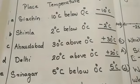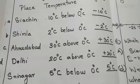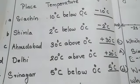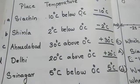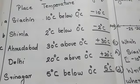Siachin. 10 degree Celsius below 0 degree Celsius. Below means negative. So, the answer negative 10 degree Celsius. Second one.